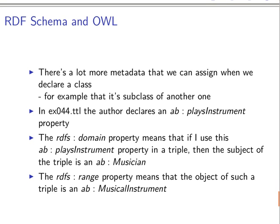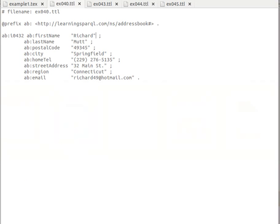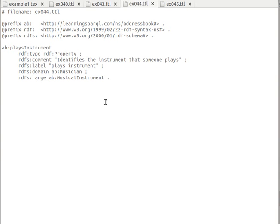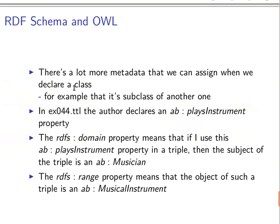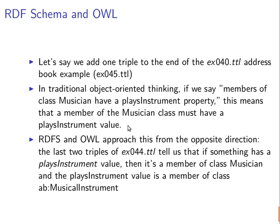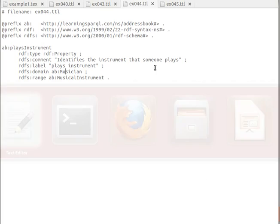In the previous video we learned about adding a class and maybe adding a subclass, and we added a property. We saw that a property needs to have a domain and a range, and we saw how to actually assign that. We added a property called 'plays instrument' and gave it a domain of class Musician and a range of class Musical Instrument. We said that whenever we use that property in a triple, the subject needs to be of type Musician and the object needs to be a Musical Instrument.